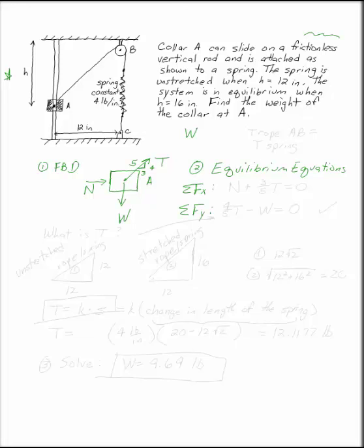The sum of the forces in y is the one we're going to need. Sum of the forces in x just says that N plus 3/5 of T is equal to zero. But I don't really need to know what N is. Even if I knew what T was, this would only give me N. N is not what I'm looking for. I'm looking for W.